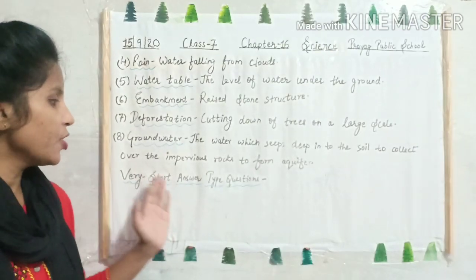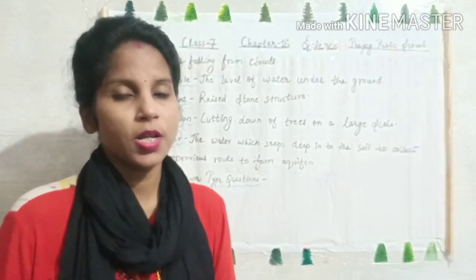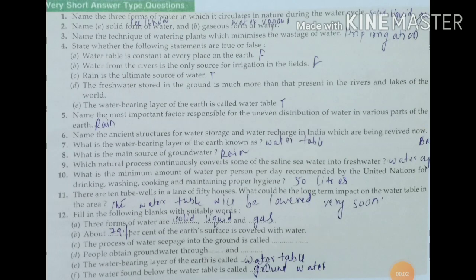Now we will discuss very short answer type questions. First one: name the three forms of water in which it circulates in nature during the water cycle. The answer is the three forms of water are solid, liquid and gas. Second one: name a solid form and a gaseous form of water. The solid form of water is ice or snow and the gaseous form of water is water vapor.